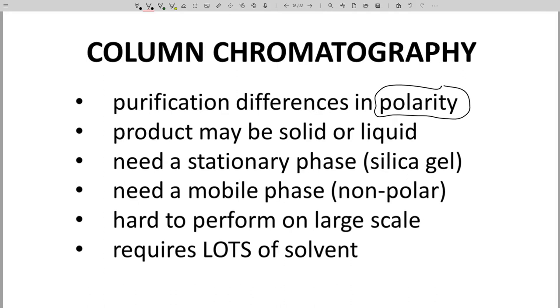You will need a stationary phase – normally silica gel, essentially finely ground glass – and a mobile phase, normally a relatively non-polar solvent. While chromatography is very flexible in terms of what can be purified, it gets more difficult if you have more material.